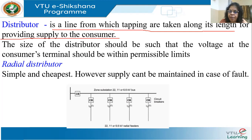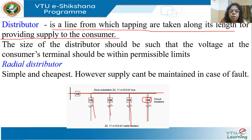The most popular type of distributor is the radial distributor — the simplest and cheapest. The distributor runs with tappings to individual customers. From the pole to a house, there may be a fuse rather than a breaker. Power is tapped in between and given to individual customers; radial distributors are very popular in residential and domestic connections.